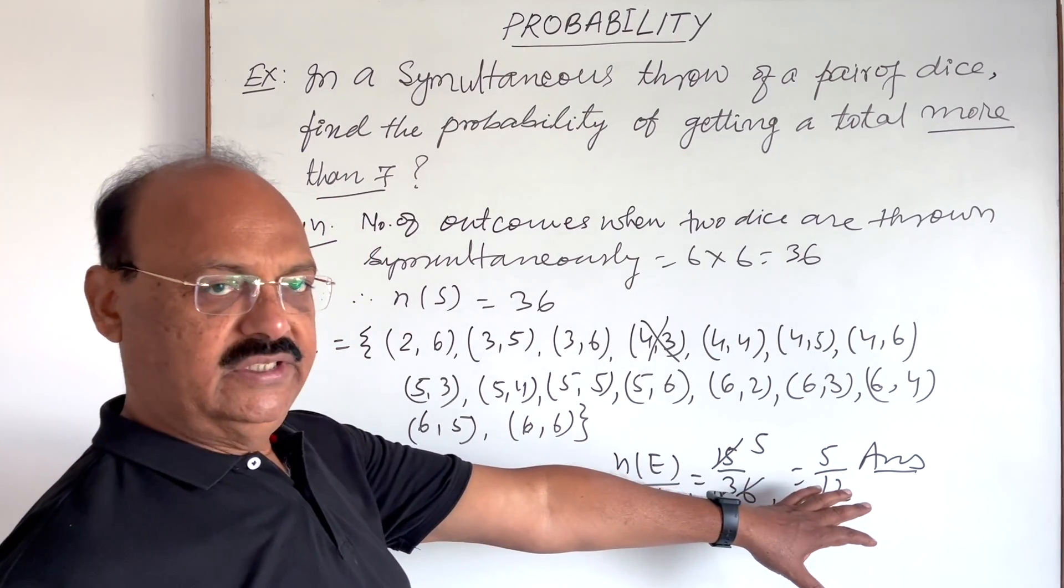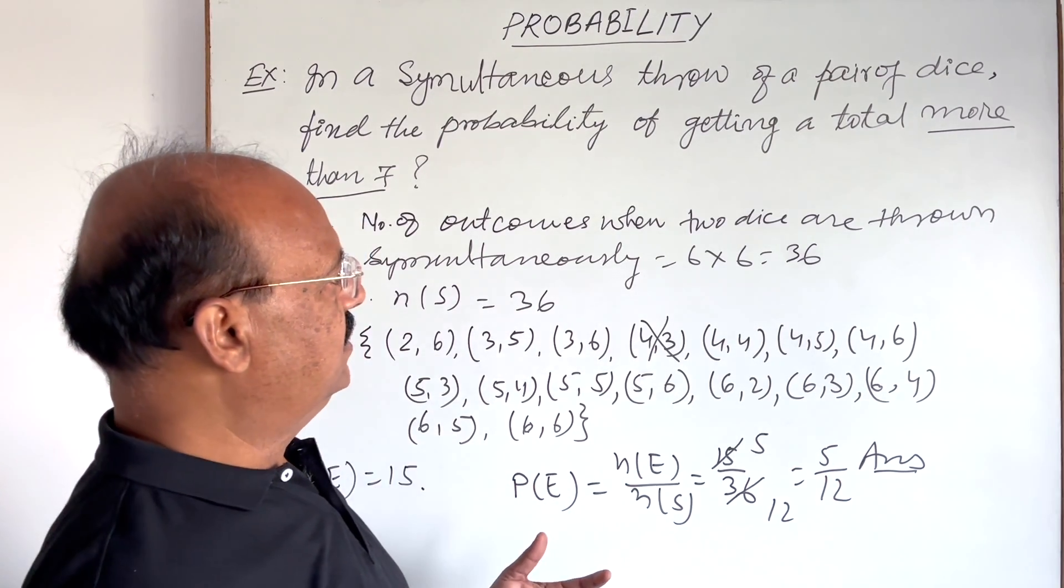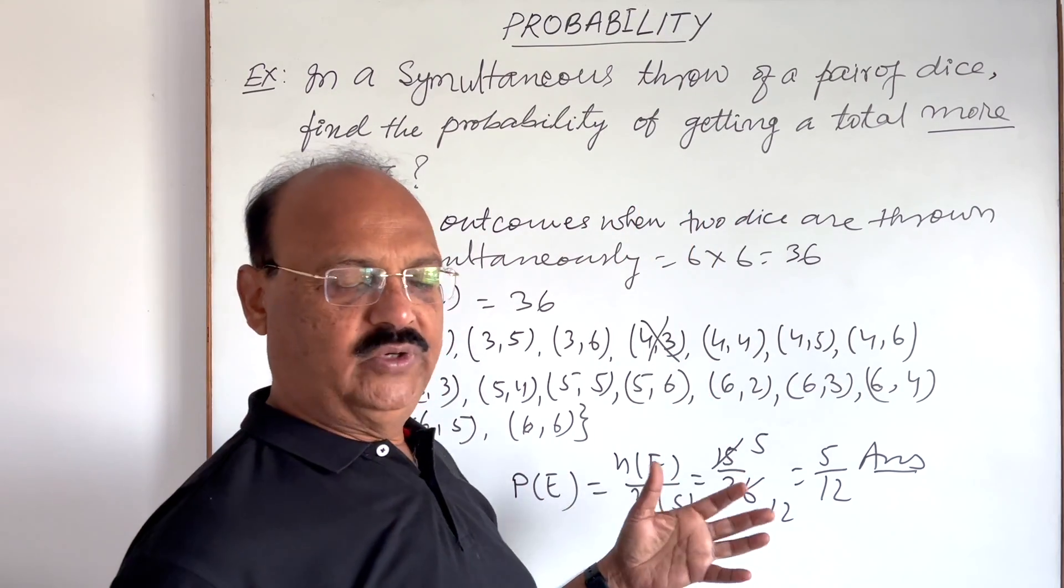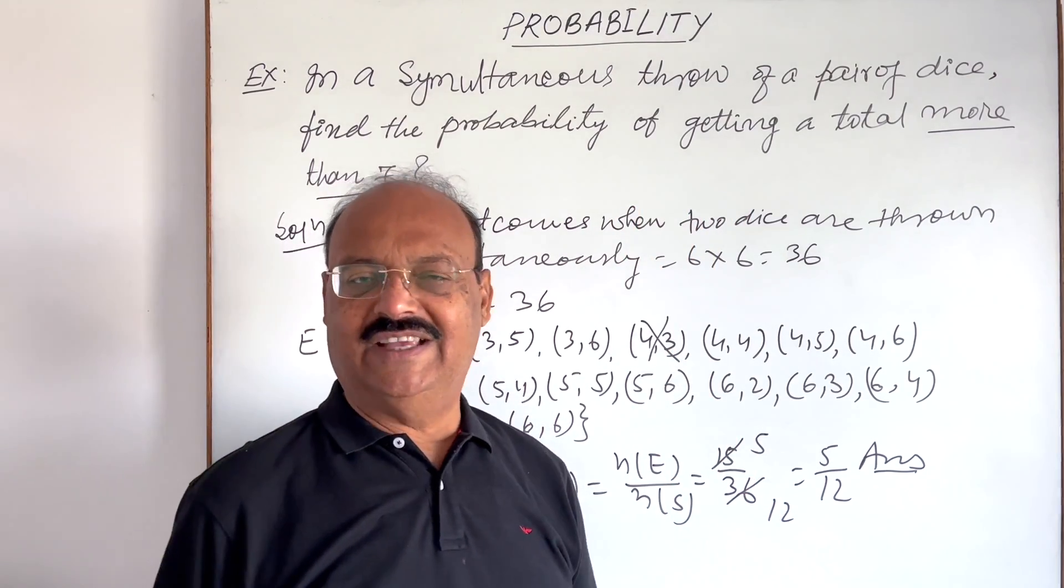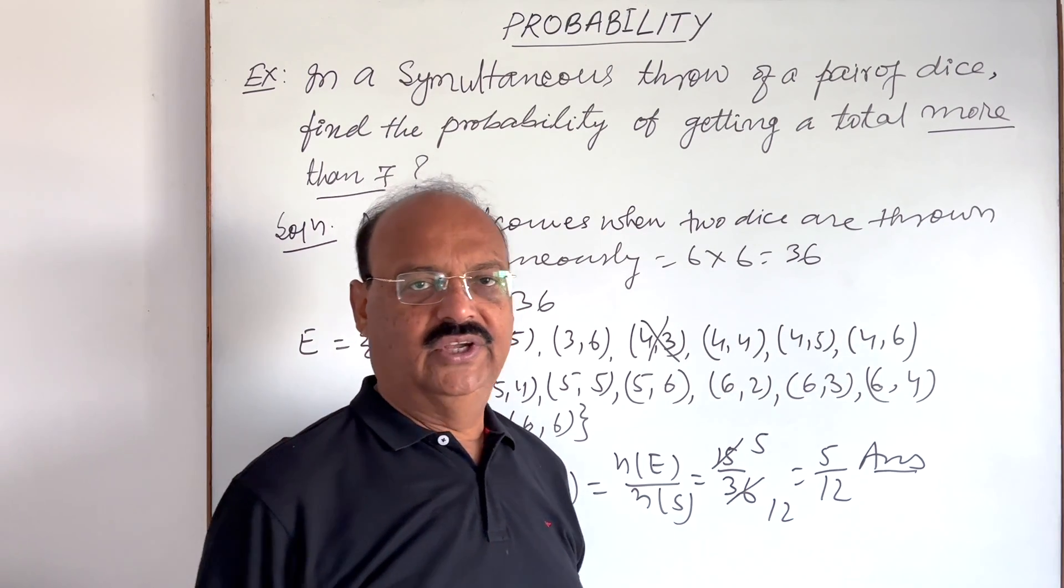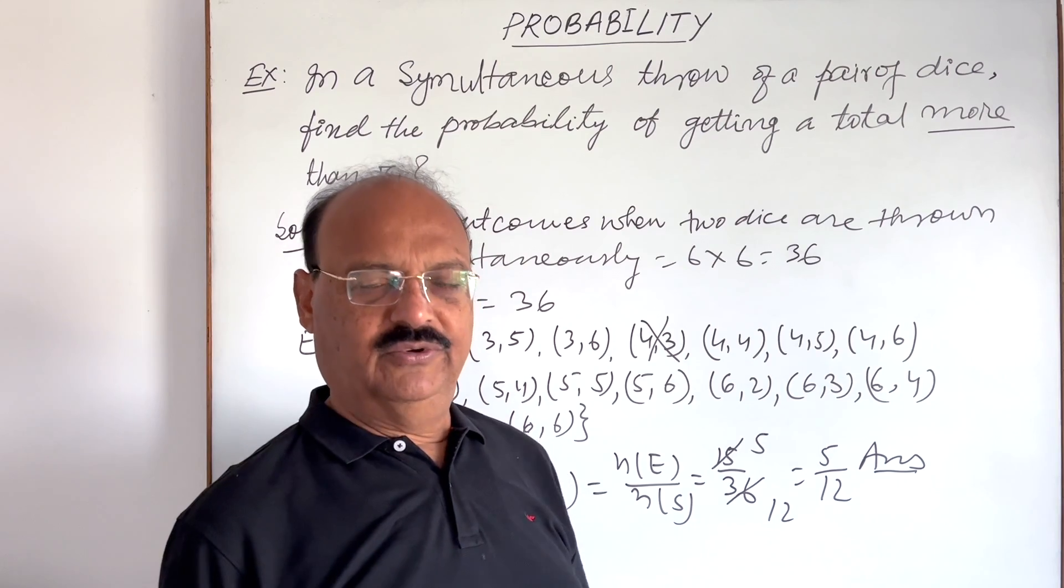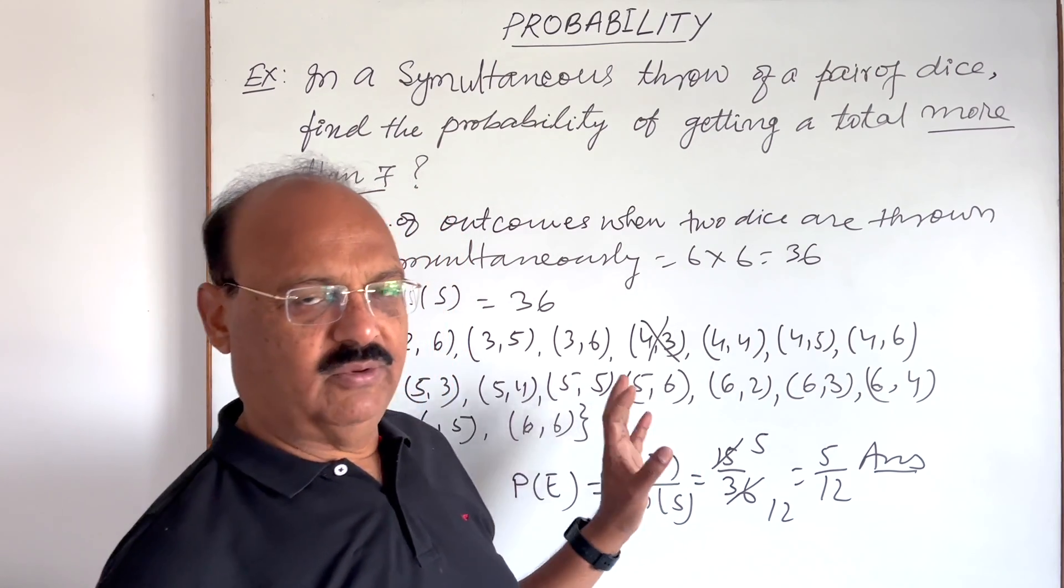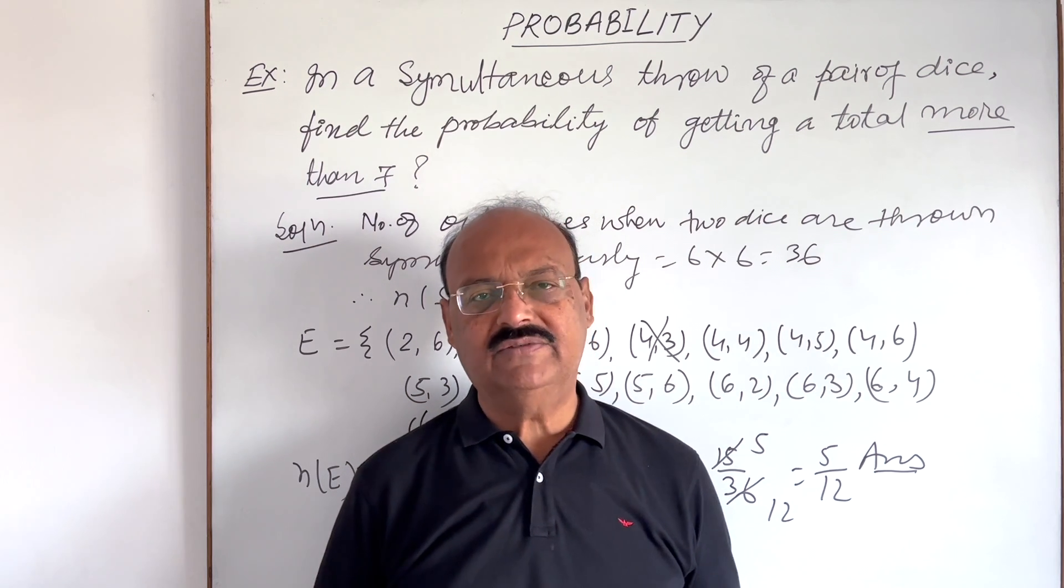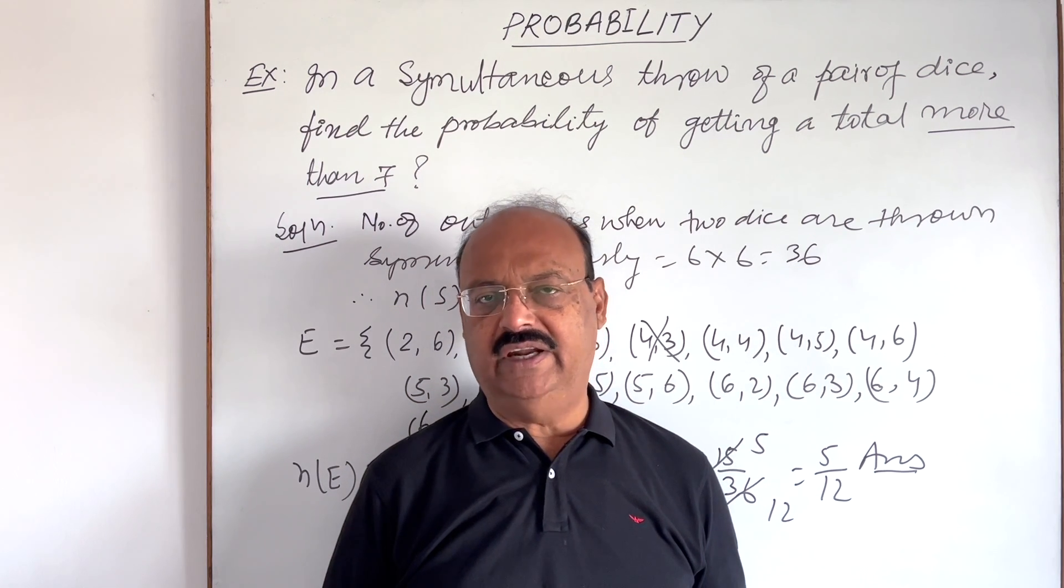This is the probability when the total number of outcomes from two dice is more than seven. So the question is simple, interesting, but important. We need to keep focus on this topic probability. This topic is important in almost all competitive examinations as well as standard 11 and standard 12.